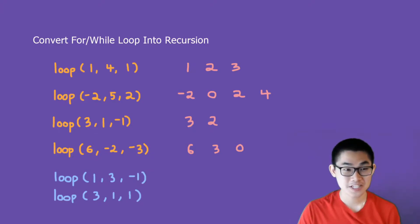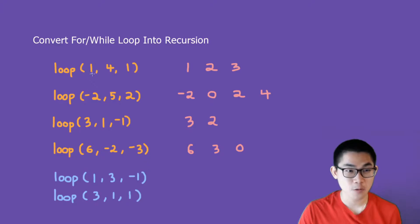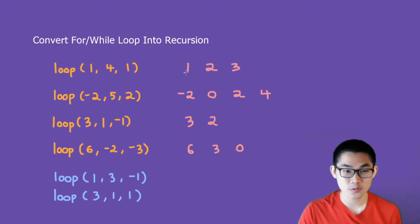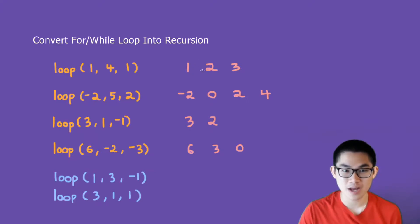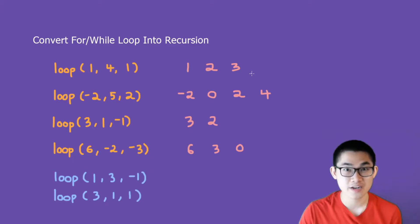For example, if we have a loop function and we have 1, 4, 1, this means we're going to print 1, 2, and 3, and we increment 1 each time, as you can see, and we will not print out number 4.